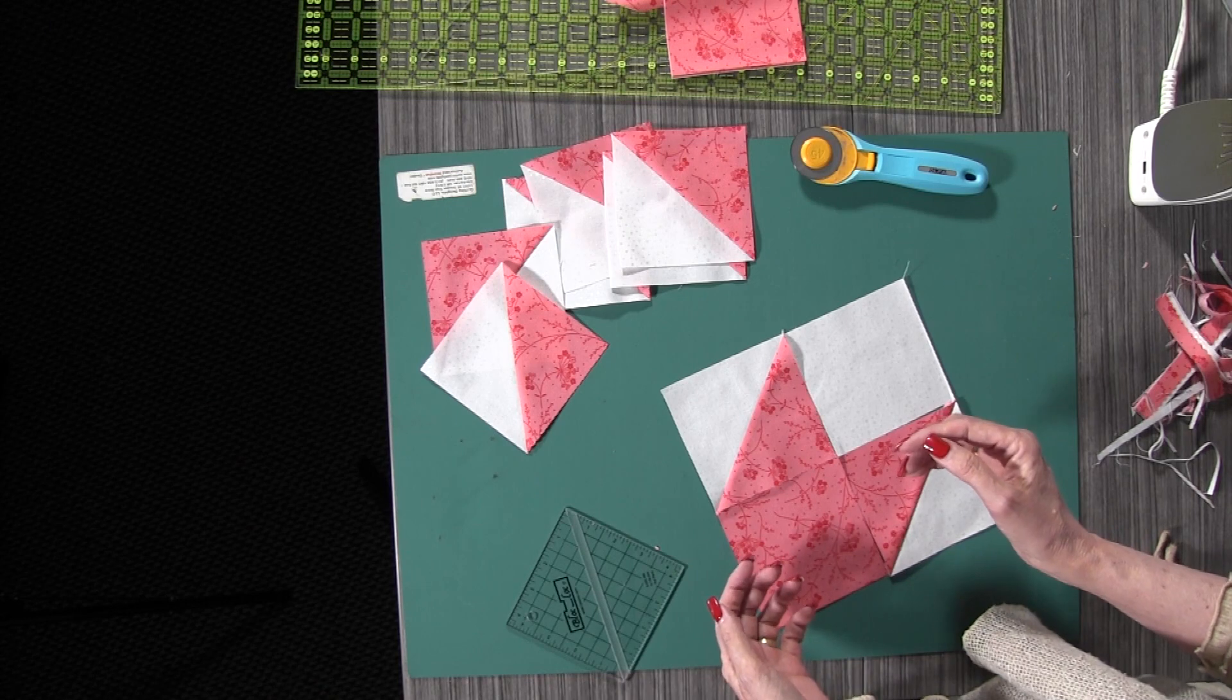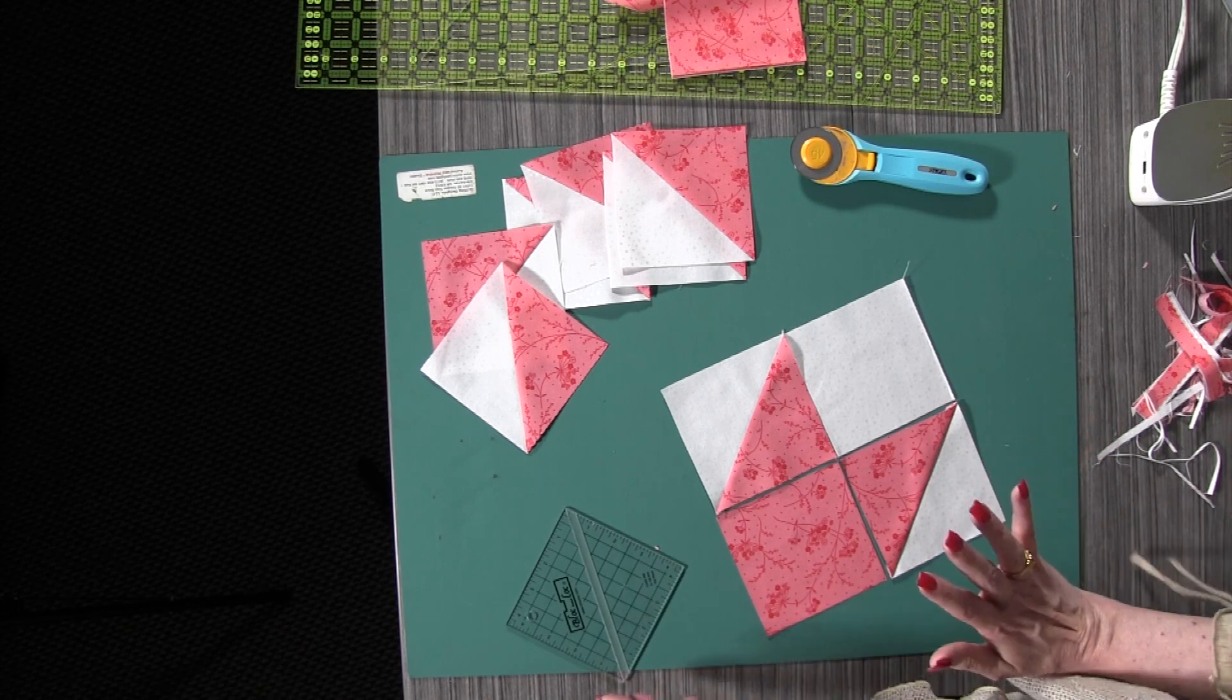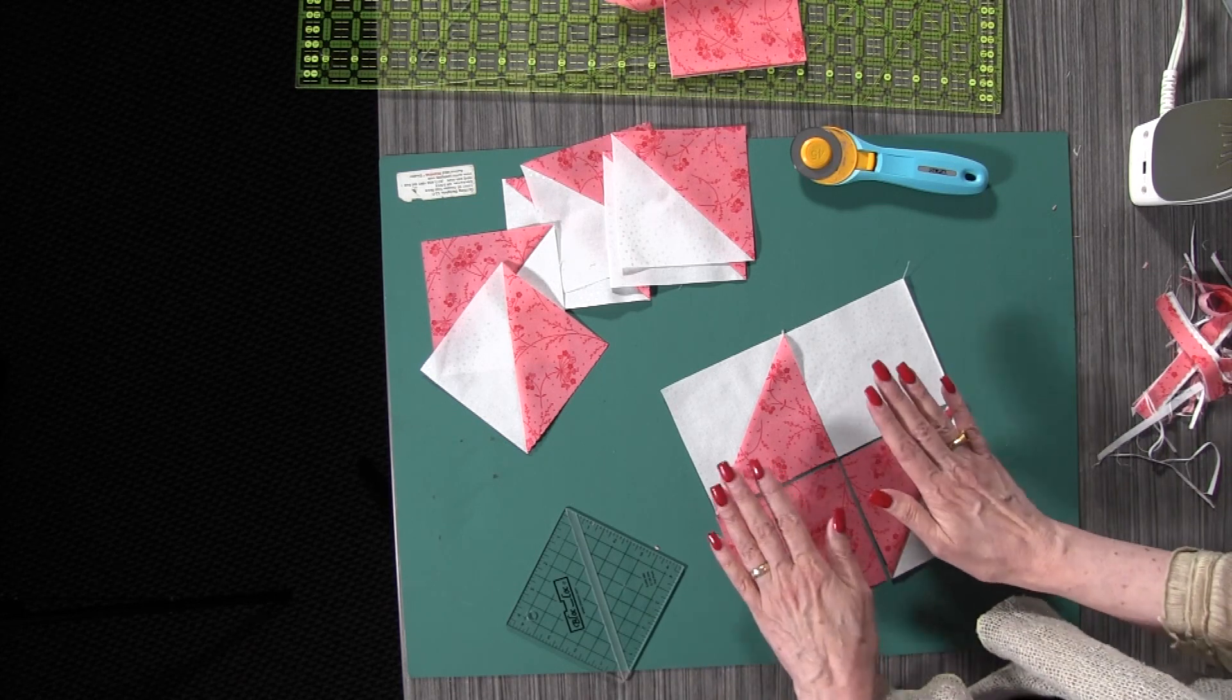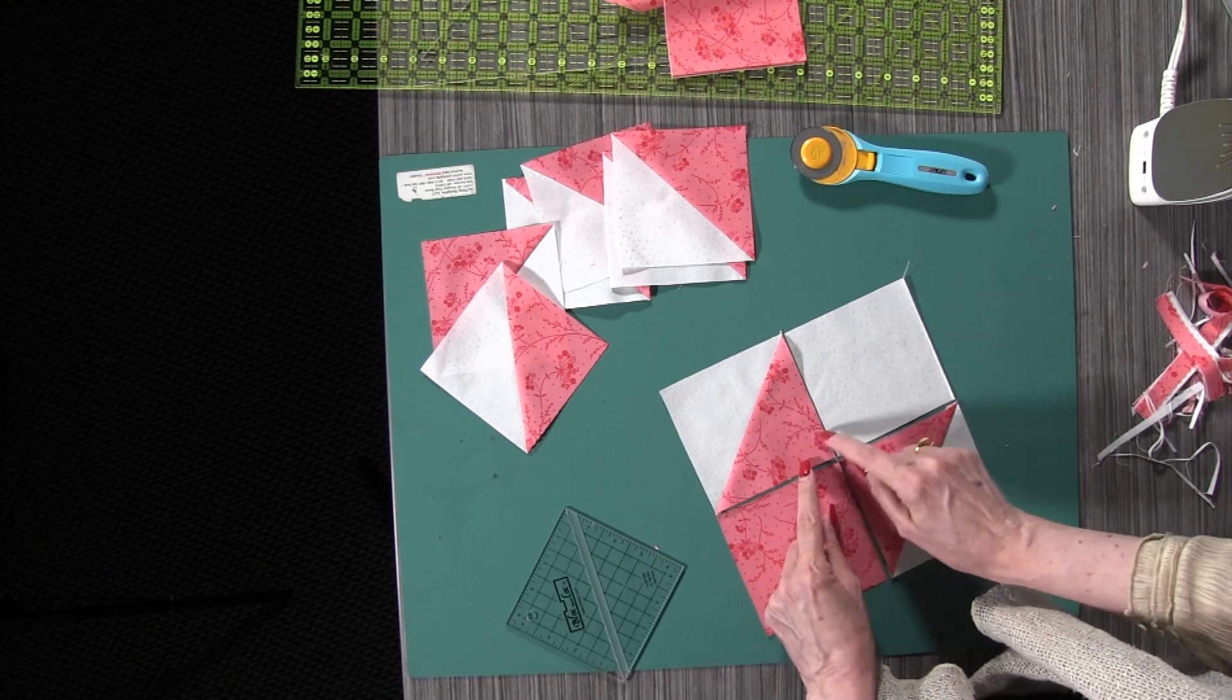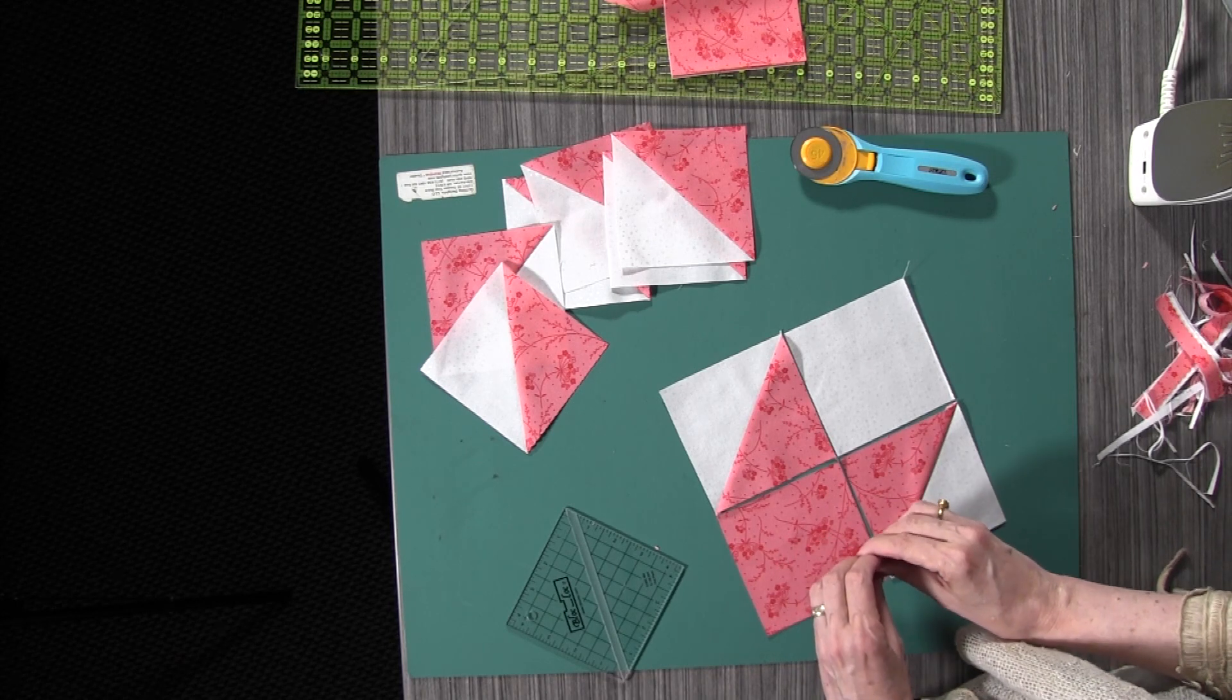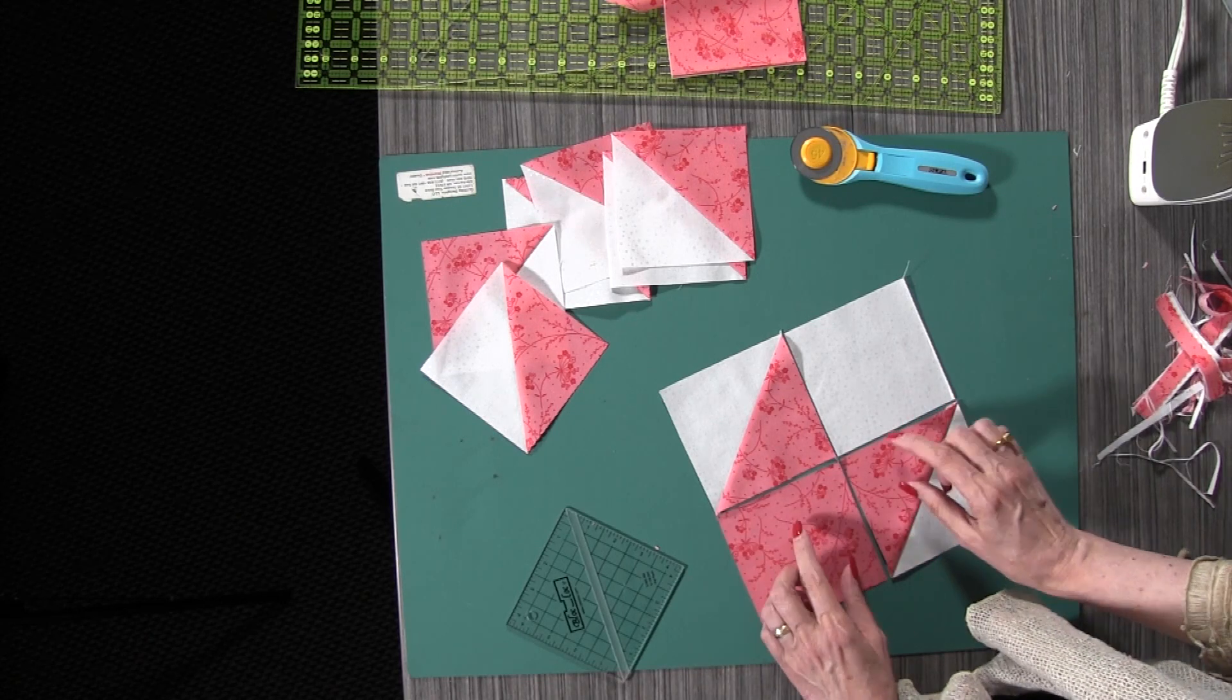One of the things I want to share with you about a four patch, this is a four patch, I think of everything as either a nine patch or a four patch or for example our floating star block is a 25 patch, each of them have a characteristic that's really important. On the four patch, what you want to do is you want to pinwheel the center seam. If you don't know how to pinwheel a center seam, then do a Google search and look up pinwheeling a four patch. It makes all the difference in the world.